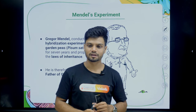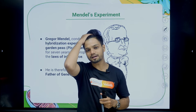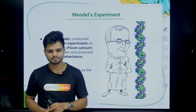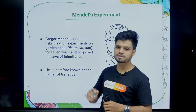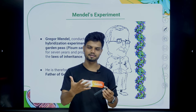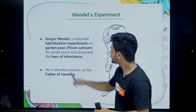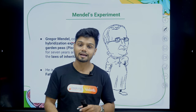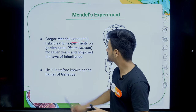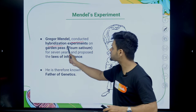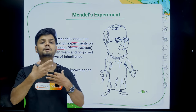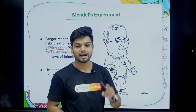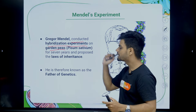Now we come to the Mendelian experiment. Who was Mendel? Gregor Mendel was a scientist — a mathematician first, who later became a biologist and botanist. Gregor Mendel conducted hybridization experiments on a garden pea. He conducted all his experiments — monohybrid cross, dihybrid cross — on a garden pea. The scientific name of garden pea is Pisum sativum. When you write it in your paper, please underline it; the first word is always capital and the second is always small.